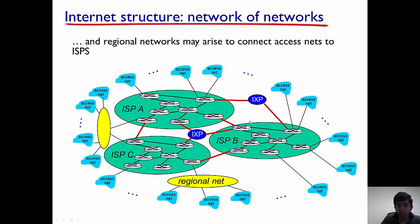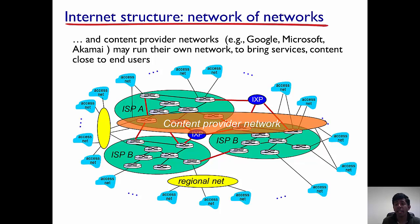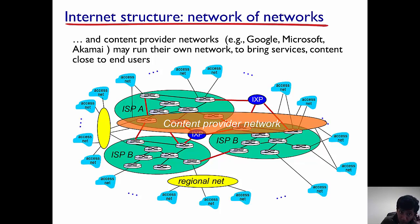As you can see, the structure of the internet is pretty complex, and it's about to get a little more complex. There are content providers — for example Google, Microsoft, Facebook, and Akamai — who want their customers to access their products very easily. To enable this, they build their own networks and the goal is to bring content closer to the end users. These are called content provider networks, and companies like Google, Microsoft, and Akamai have networks of their own.